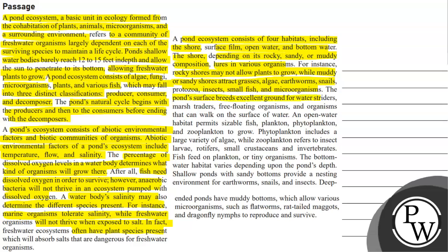The pond surface breeds excellent ground for water striders, marsh traders, free-floating organisms, and organisms that can push on the surface of water. An upper water habitat permits sizable fish, plankton, phytoplankton, and zooplankton to grow. Phytoplankton includes a large variety of algae, while zooplankton refers to insects, larvae, rotifers, small crustaceans and invertebrates.